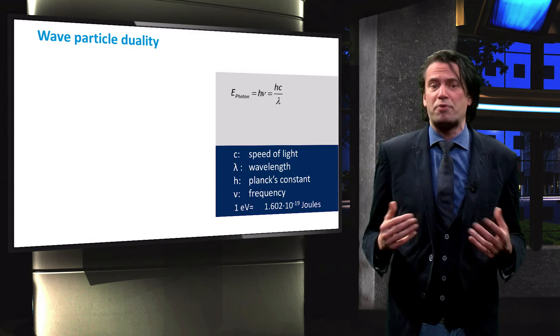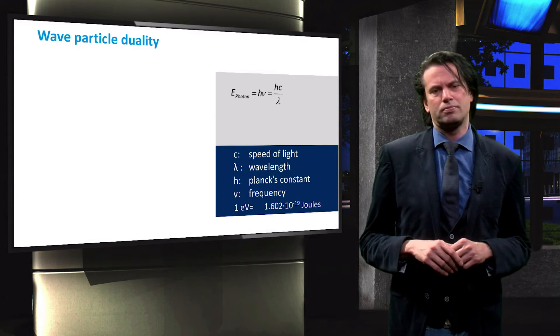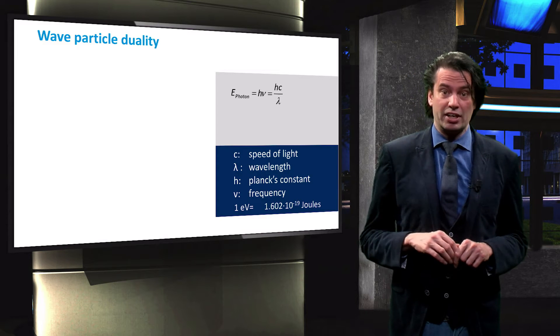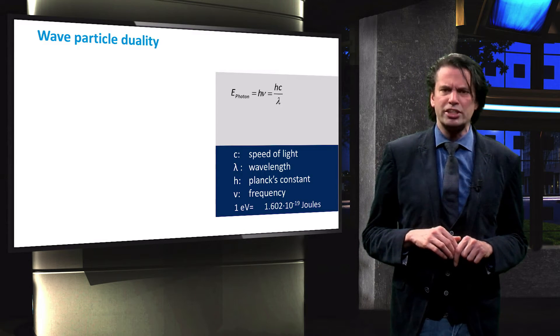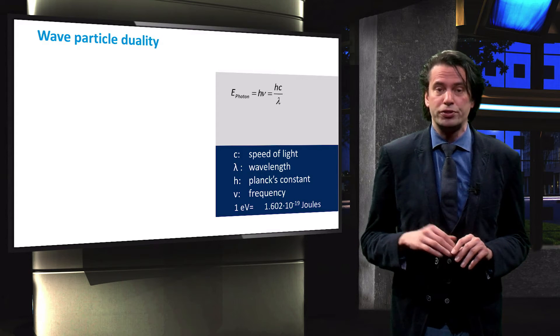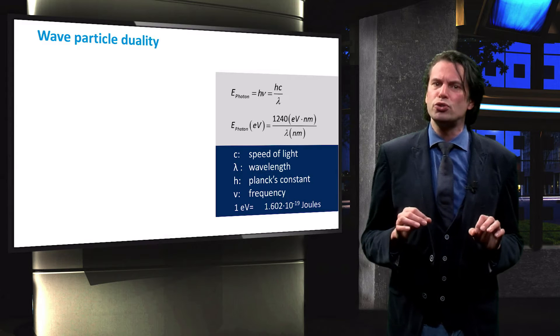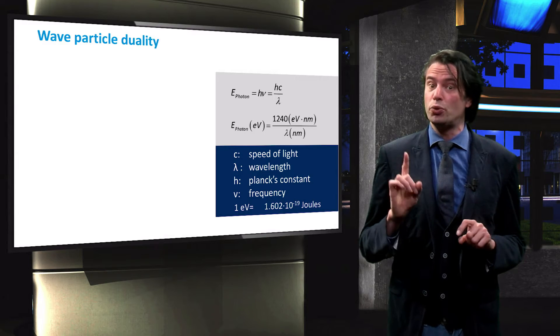The wavelength is generally expressed in nanometers. The Planck constant times the speed of light expressed in electron volts and nanometers equals 1240 eV nanometer. This number can be used to relate the photon energy to its wavelength.